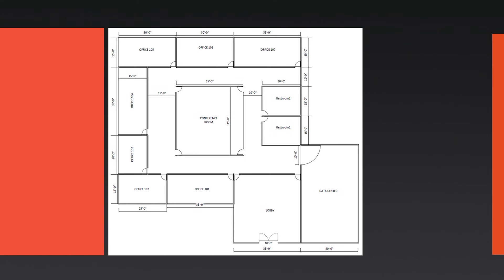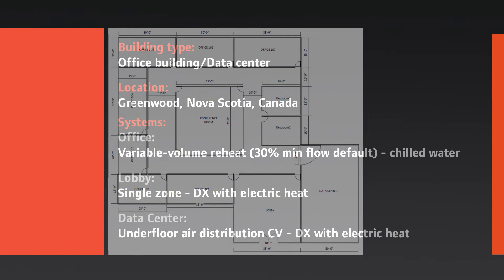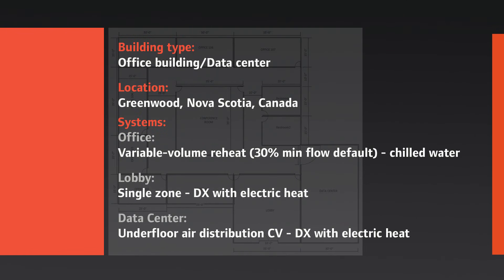We will create an office building with a data center that utilizes three different air side systems. The air side systems include a VAV with reheat system for the offices, a single zone system for the lobby, and an underfloor air distribution system for the data center. All of the example project information is listed in the document Load Design 101 Exercise Information. We will start this Load Design 101 training by creating a new project and selecting a theme.